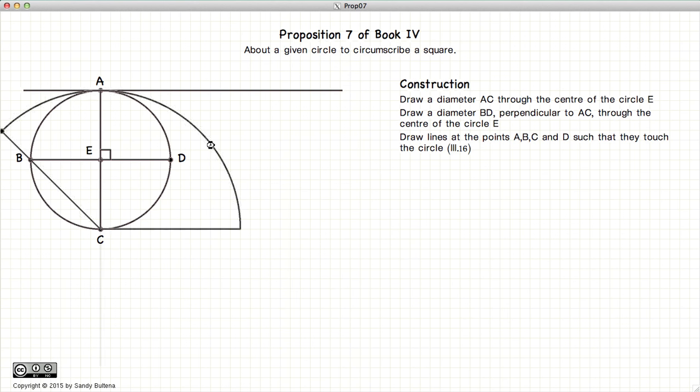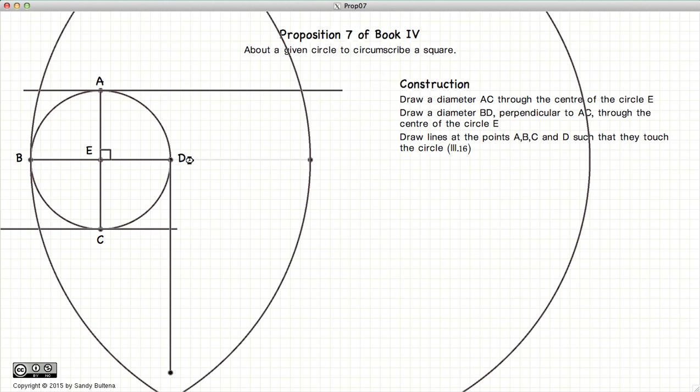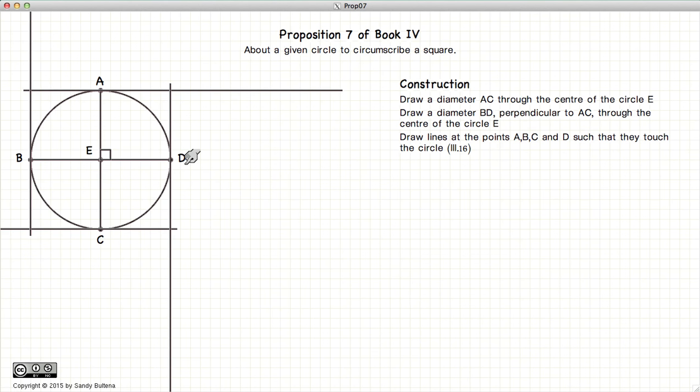Next we draw lines at point A, B, C and D such that they just touch the circle. We label the points of intersection FGHK. And now we have that FGHK is a square drawn so it just touches the circle.